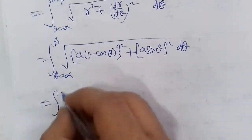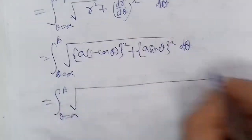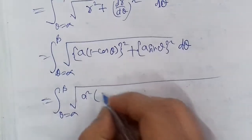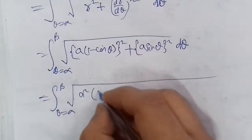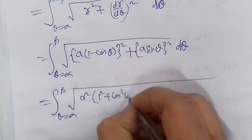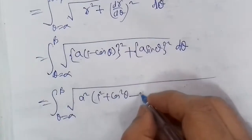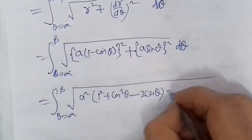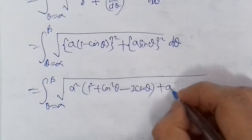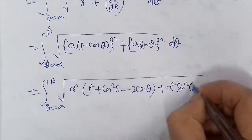θ = α to β, square root, whole square root: 1² + cos²θ - 2 × 1 × cos θ + a² sin²θ